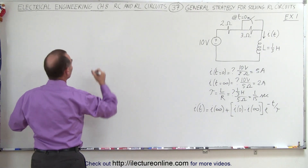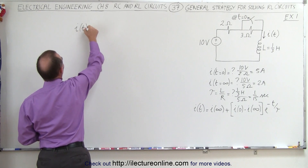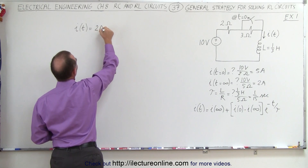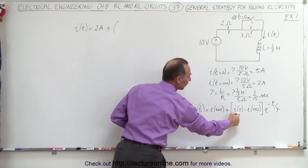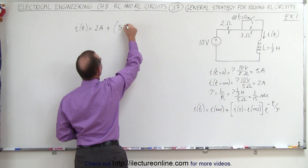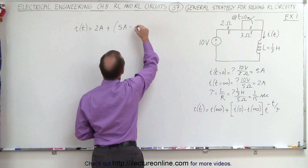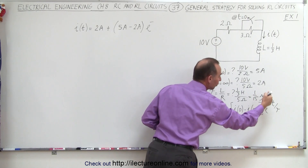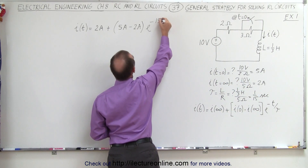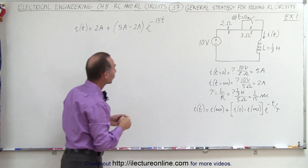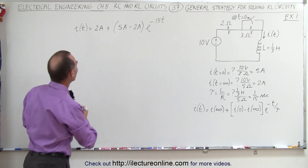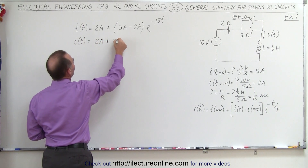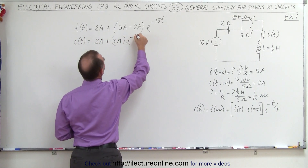So now we come up with the equation. The current as a function of time equals the current at infinity after 5 time constants have elapsed, which is 2 amps, plus the difference between the current at the beginning — 5 amps — minus the current after a long time has passed — 2 amps — multiplied by e to the minus t over tau. Since tau is 1/15, 1 over tau will be 15, so simplifying, we get i(t) = 2 amps + 3 amps times e to the minus 15t.